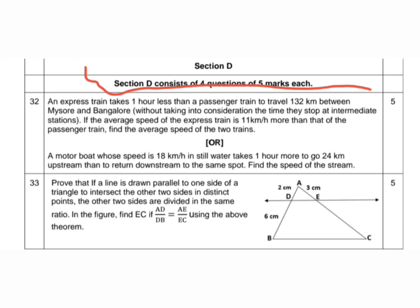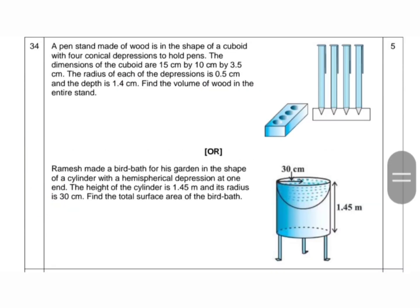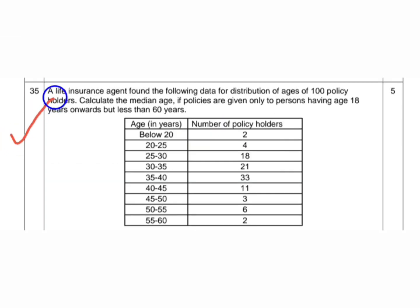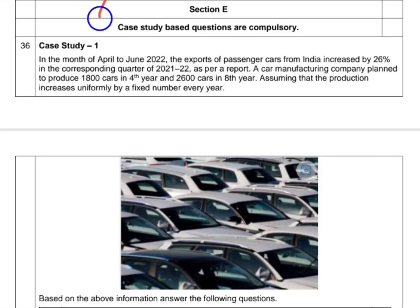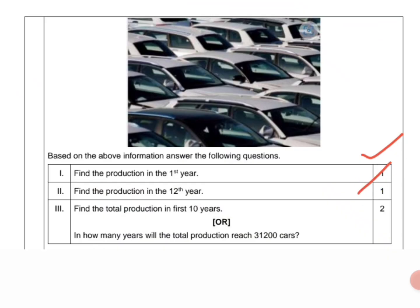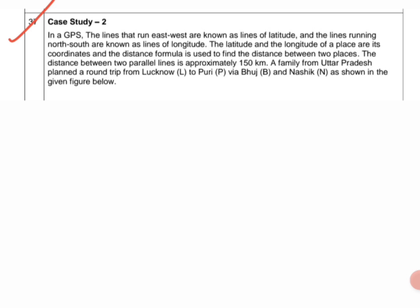Section D has four questions of five marks. This is question 32, question 33, question 34, and in question 34 choice is there, question 35. Section E case study questions are compulsory. Question number 36 case study 1, and this is the figure. One mark, one mark, and two marks.